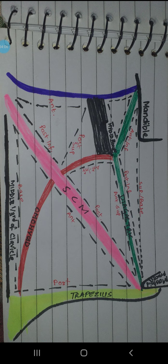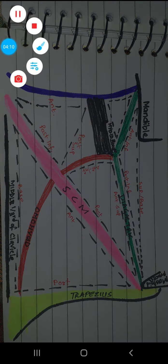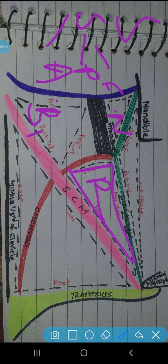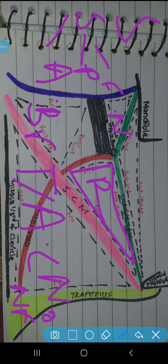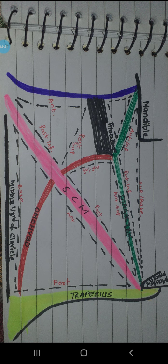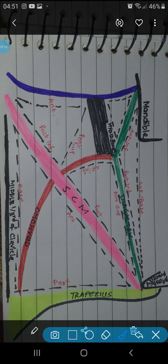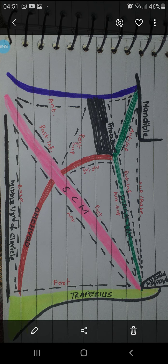Now let's look at the roof of the carotid triangle. The roof is formed by skin, superficial fascia - and in the superficial fascia you will see the facial nerve, platysma, and the ascending branch of the transverse cervical or anterior cutaneous nerve of the neck. The deep fascia splits and the submandibular gland is enclosed in the roof of the carotid triangle.